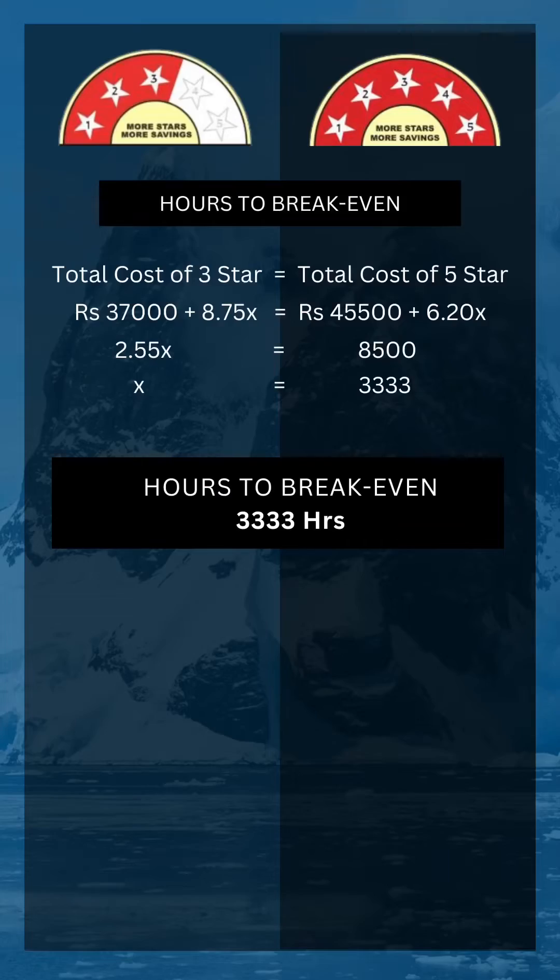Let the hours to break even be X. Formula lagaa kar break-even hours nikalte hain — that comes to 3,333 hours, which means after 3,333 hours both ACs will have the same total cost.